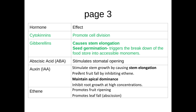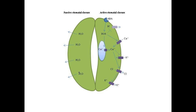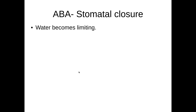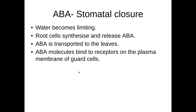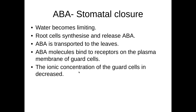So that's seed germination. The next one is abscisic acid, also known as ABA, and this is involved with stomatal opening and closure. The way that this works is that water becomes limiting. The root cells will produce and make ABA. This will then travel up to the leaves of the plant and bind to specific and complementary receptors on the cell surface membrane of the guard cells.